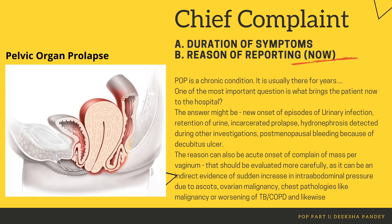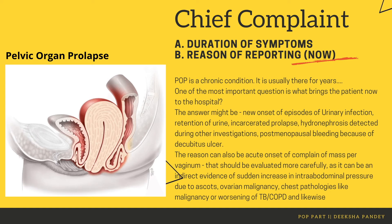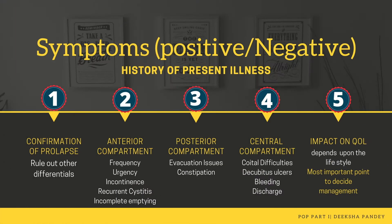The reason can also be an acute onset of complaint of a mass per vaginum, and that should be evaluated more carefully as it can be indirect evidence of a sudden increase in intra-abdominal pressure, which might be due to ascites, ovarian malignancy, chest pathology like malignancy, worsening tuberculosis, COPD, or similar conditions. The history of present illness is divided into five sections: confirmation of prolapse, symptoms related to the anterior compartment, posterior compartment, central compartment, and the fifth — impact on quality of life.